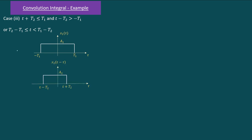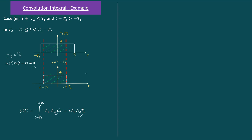Moving a bit further, the second rectangular function is now completely inside the first rectangular function. This is possible because of the condition t2 < t1. The common area in this case runs from t − t2 to t + t2. Since x1(τ) = a1 and x2(t − τ) = a2 throughout, the integral simplifies to a constant value: y(t) = 2·a1·a2·t1.